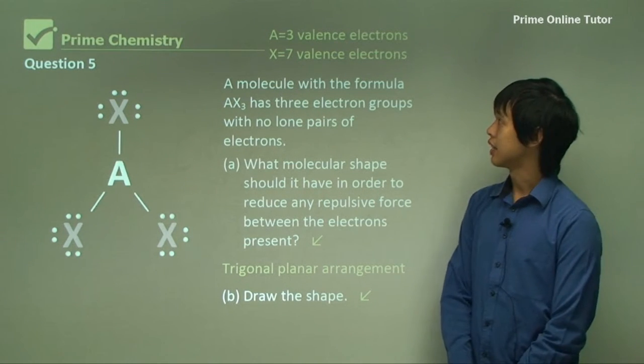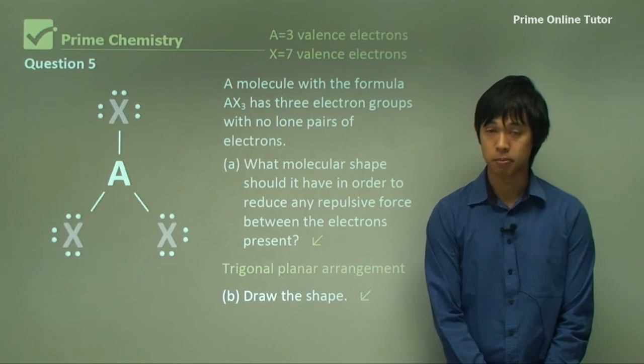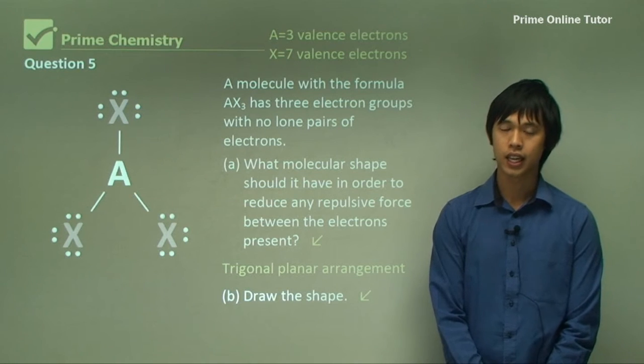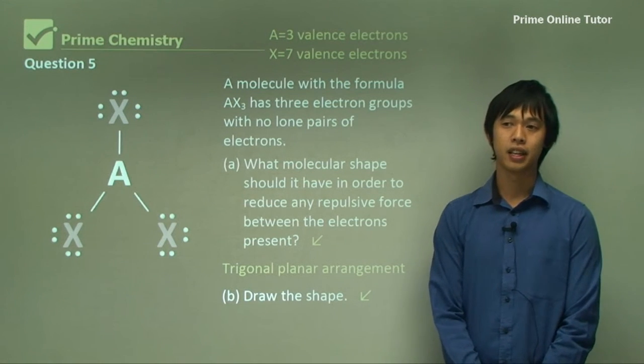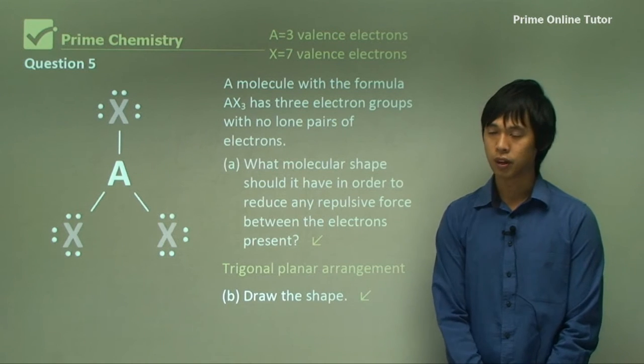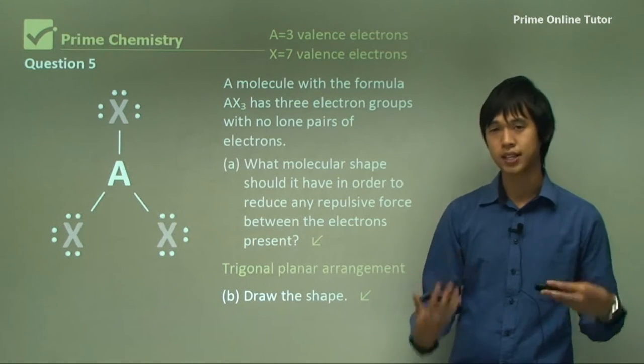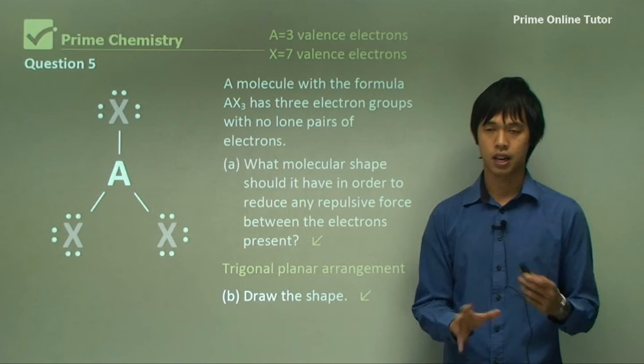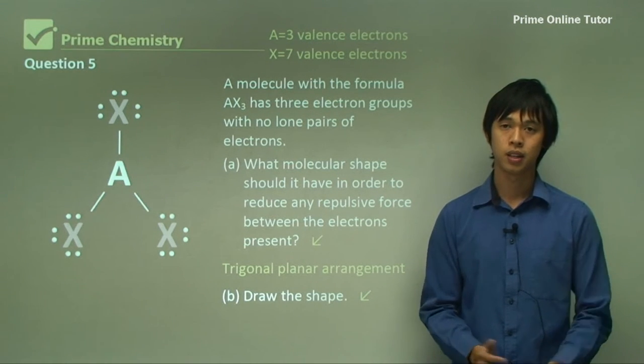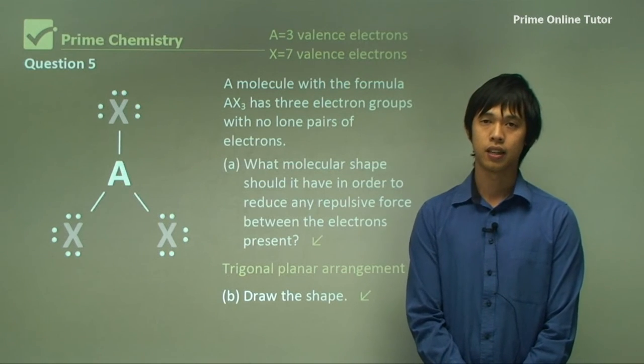So that concludes today's lesson on VSEPR, or valence shell electron pair repulsion. Again, as I mentioned, it's complex. And it's very, very difficult. There are many facets to it. But hopefully you understand the base principles to it. And you can apply it to your chemistry. And hopefully you'll be able to see why certain molecules or certain shapes. So thank you. And I look forward to seeing you at our next lesson.